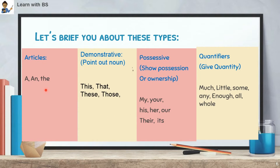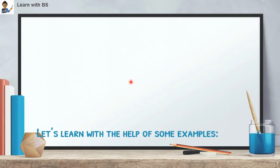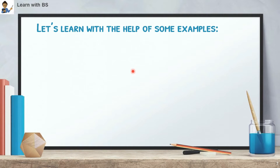Now let me help you understand with the help of examples, so that you understand better. Let's learn the four types of determiners through example sentences.